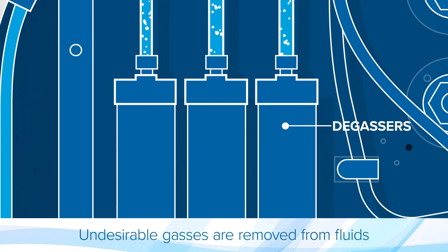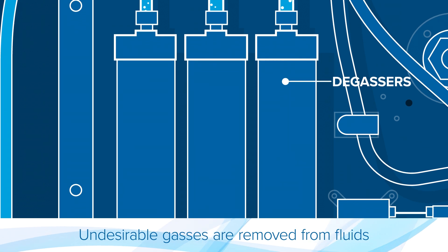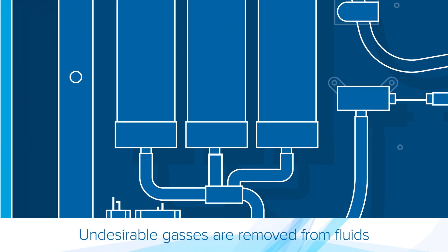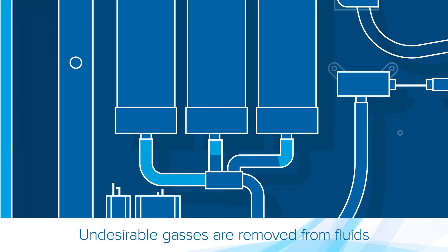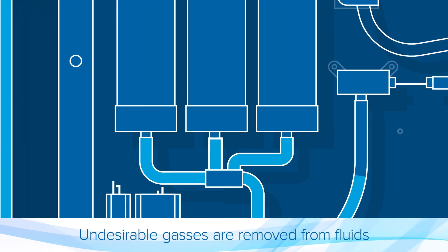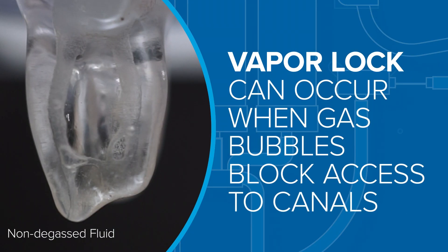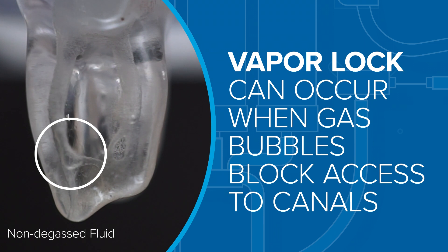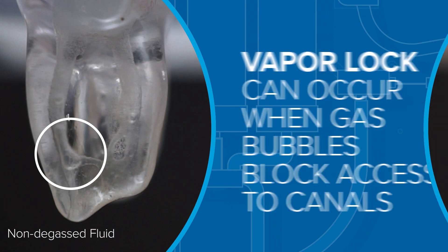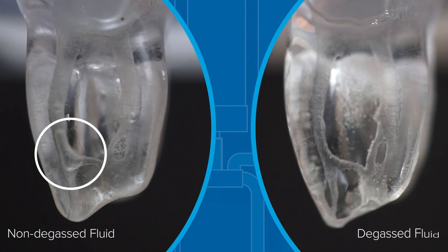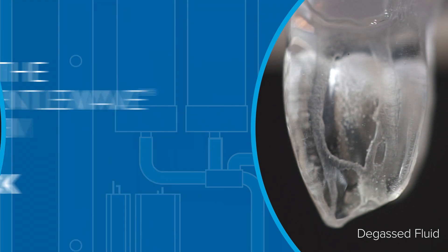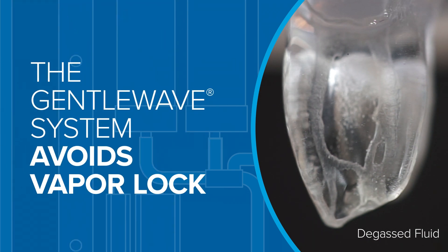The degassing process eliminates gas bubbles from procedure fluids in order to avoid vapor lock from occurring inside the root canal. Vapor lock occurs when gas bubbles in standard root canal treatment fluids act as barriers in the root canal system, blocking the path and preventing the fluids and energy from reaching all areas of the root canal system.